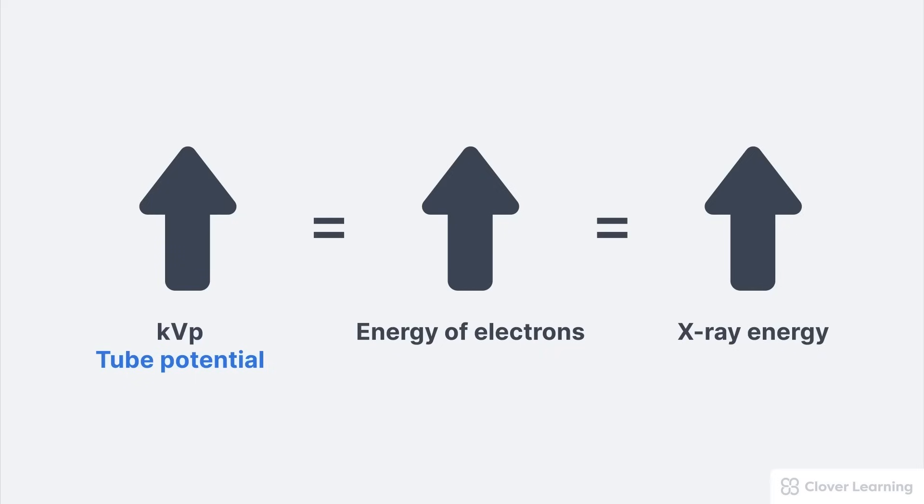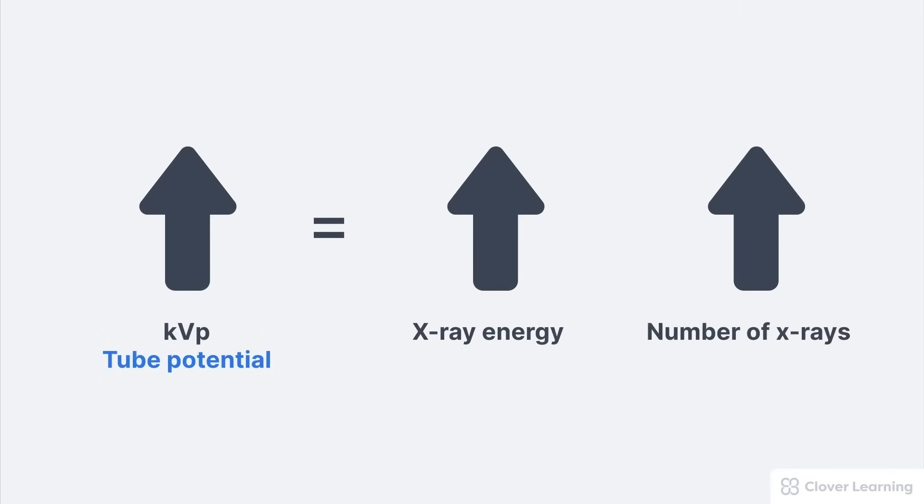Increased electron energy also increases the total number of X-rays produced, and that's mainly because high-energy electrons are more likely to be converted into X-rays. So increasing kVp increases both the number and energy of X-rays created.